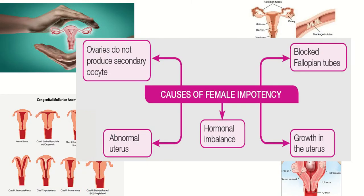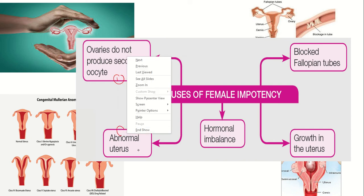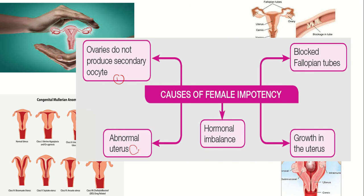The causes of female impotency include: the ovaries do not produce secondary oocytes, abnormal uterus, hormonal imbalance, blocked fallopian tubes, or growths in the uterus such as cysts or fibroids.